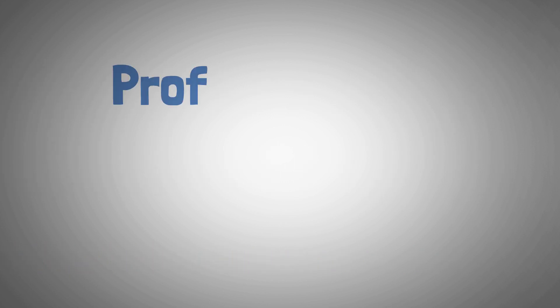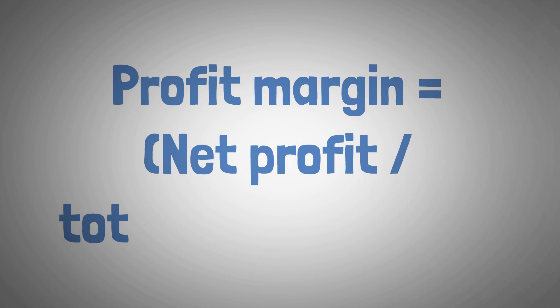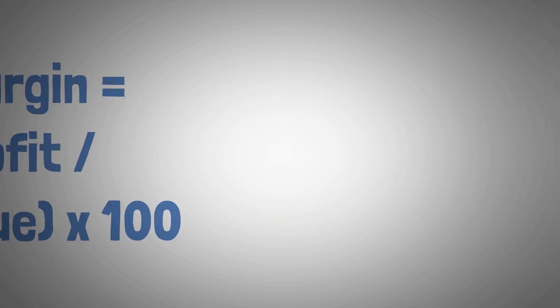In sum, the profit margin equals net profit divided by total revenue times 100. Let's illustrate this with an example.